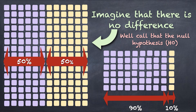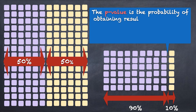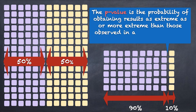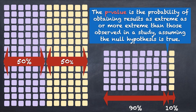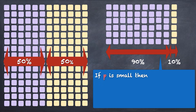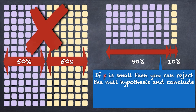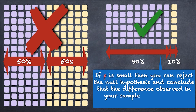Now you can perform a statistical test — in this case a Z test — and that's going to give you a p-value. The p-value is the probability of obtaining a result as extreme or more extreme than what you've observed, assuming the null hypothesis is true. In other words, in this example, if 50% of the population were in fact purple, what are the chances we'd get a random sample where 90% were purple? It would be very unlikely — the p-value would be very small. So if the p-value is small, you can reject the null hypothesis and conclude that the difference observed in your sample is statistically significant.